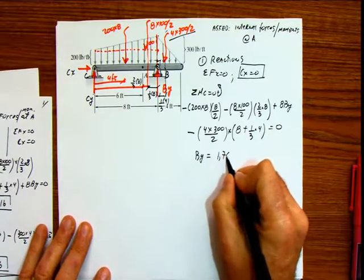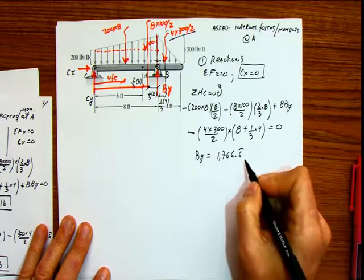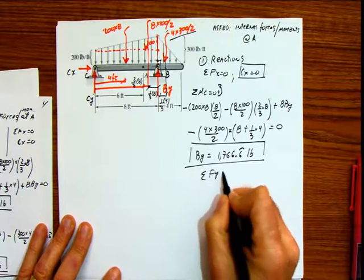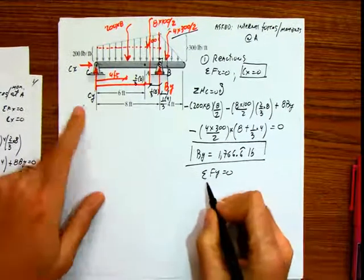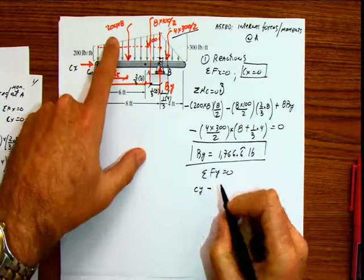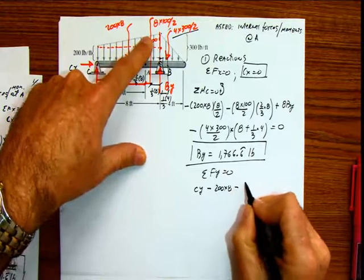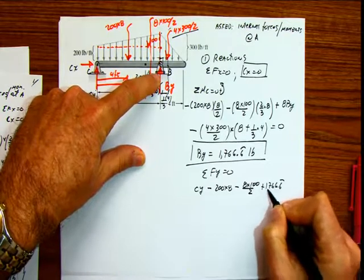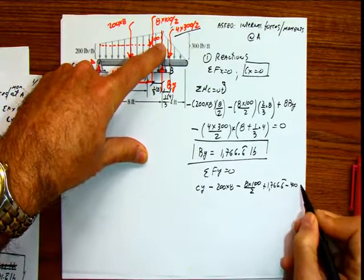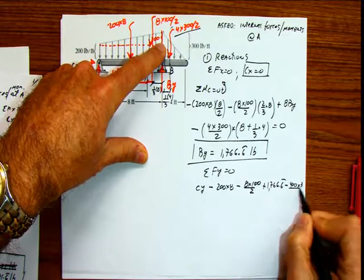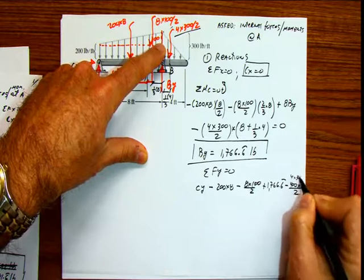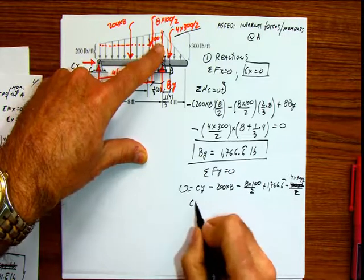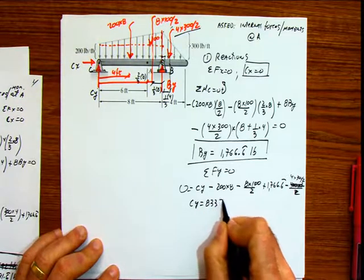By equals 1,766.6 pounds. Then doing summation of forces in y equals 0, we get Cy minus the rectangular force, minus the left triangular force, plus By, minus the right triangular force — 4 times 300 divided by 2 — equals 0. And then Cy equals 833.3 pounds.